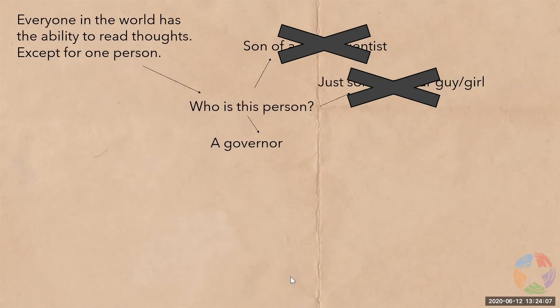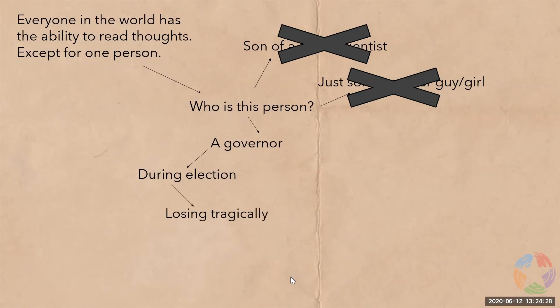We can keep asking questions based on this branch. If we ask how he came to be, maybe this person isn't a governor just yet — we're looking at him during his election. How did the election go? He lost tragically? Well, that seems the logical answer if he can't read minds. So maybe we scratch that off and try something else.